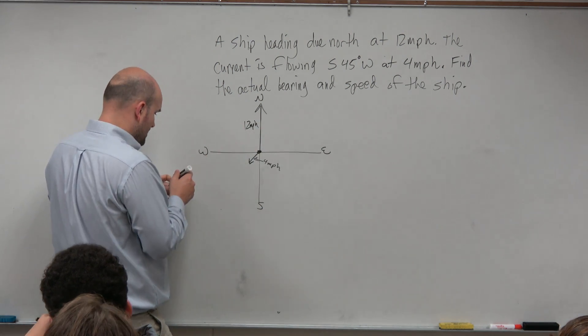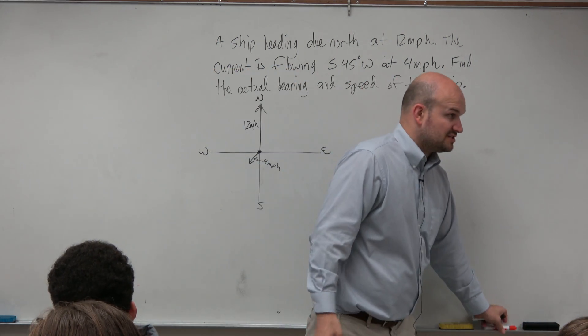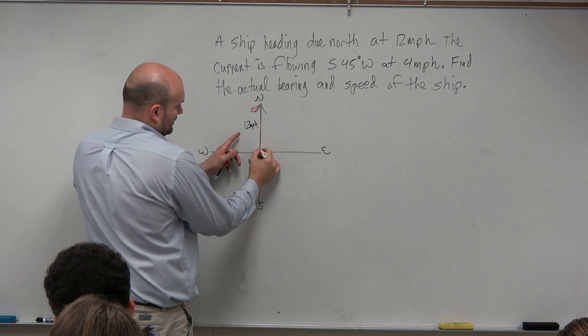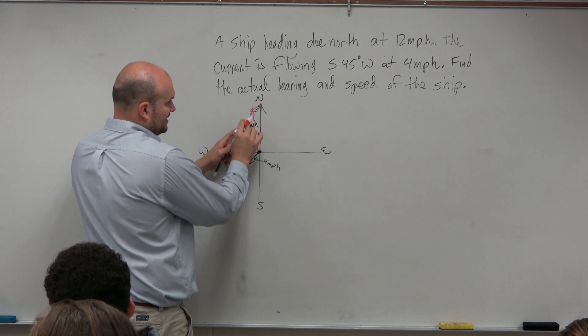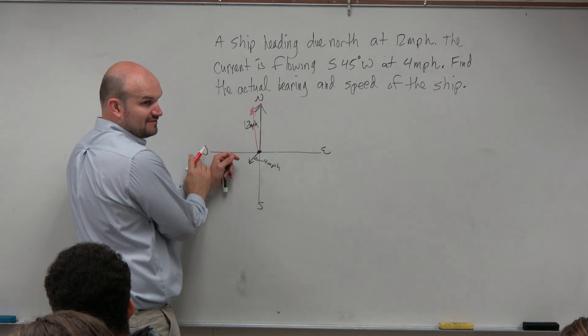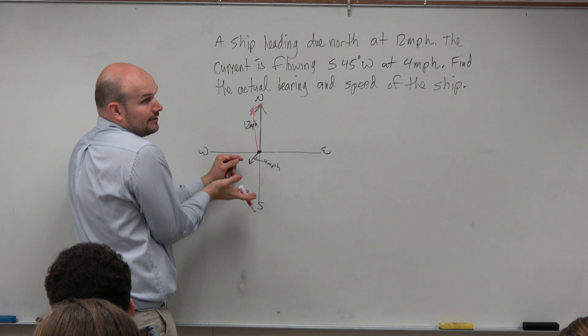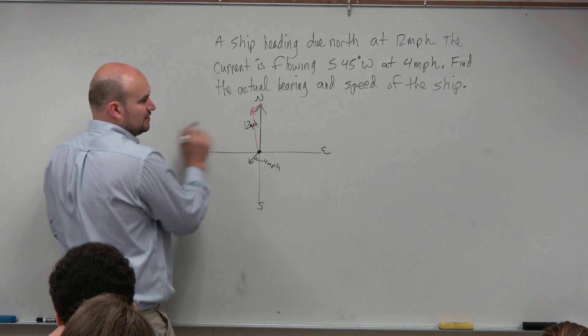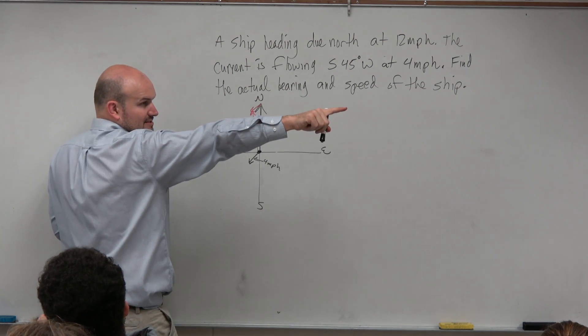So what they're asking us is find the actual bearing and speed of the ship. So we know from our understanding of resultant vectors, if we kind of do the tail to end method, here's going to be our resultant vector. It's going to be shorter than our original vector, and it's going to be farther to the left. Now, what is it? I don't know. We're going to have to figure that out, OK?